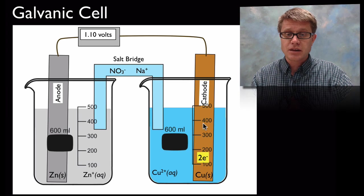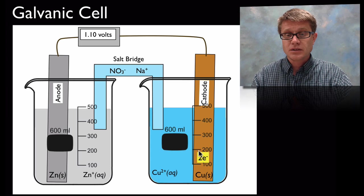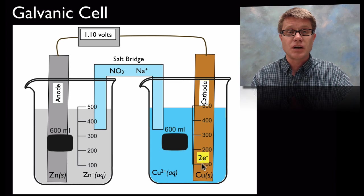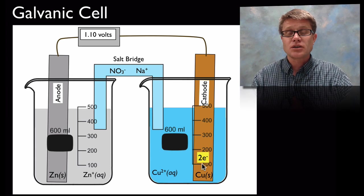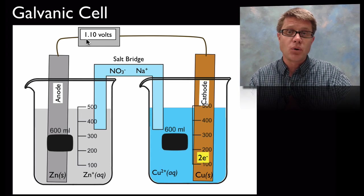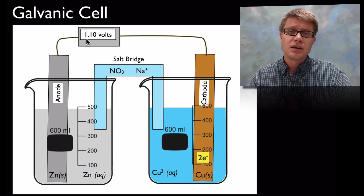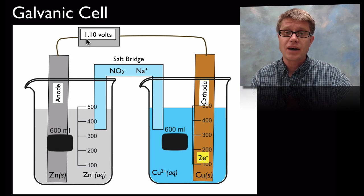If we look over on the other side the cathode is actually going to gain mass because that copper that's in solution is going to combine with those electrons that are coming over from the anode, and it's going to form a copper metal. And so we can see that the voltage is 1.1 volts. How did I get that 1.1 volts? I simply added up the reduction potential of those two half reactions.